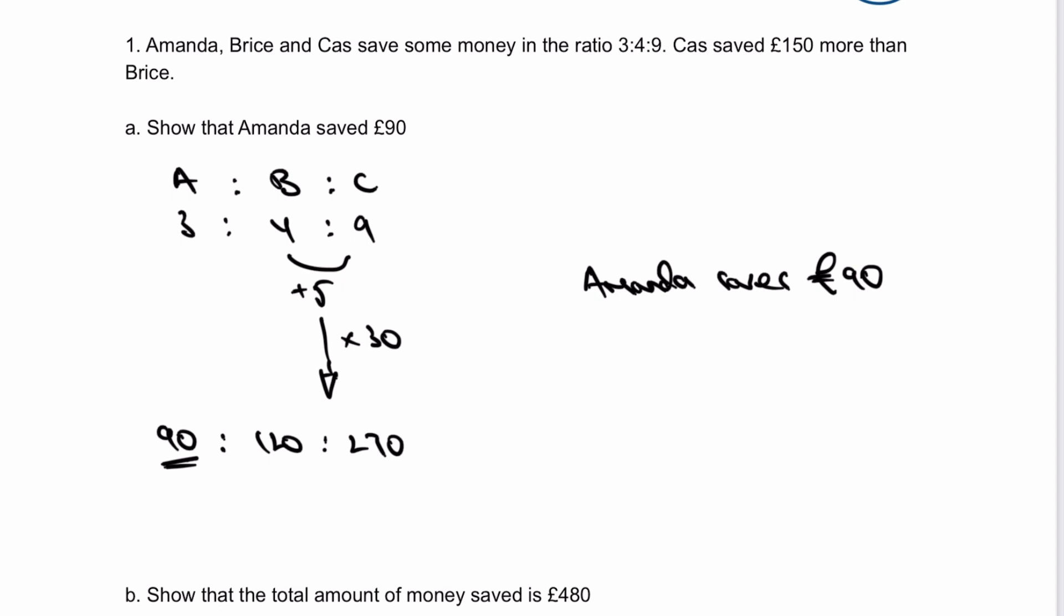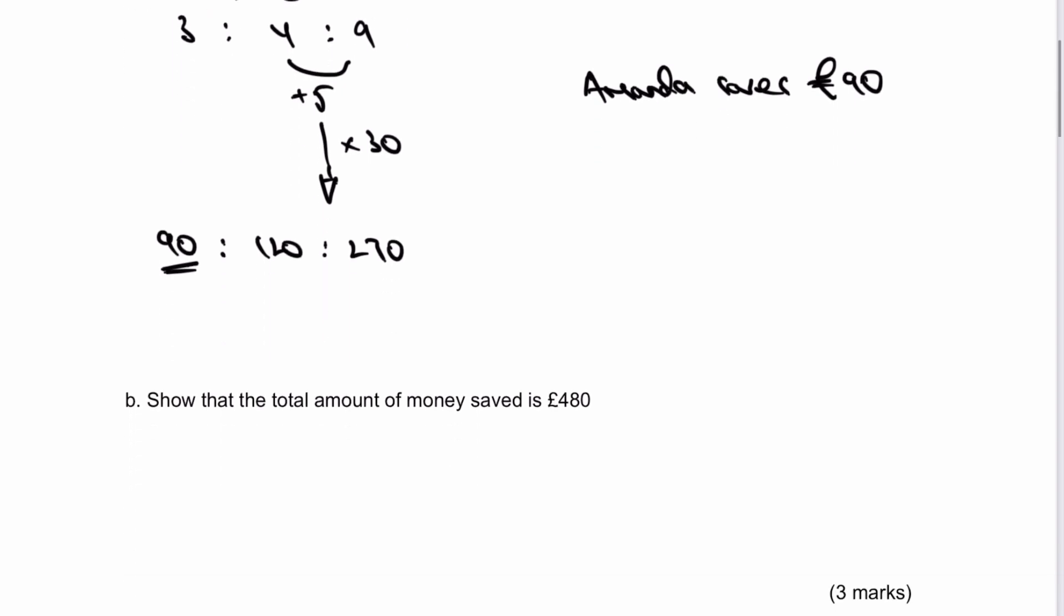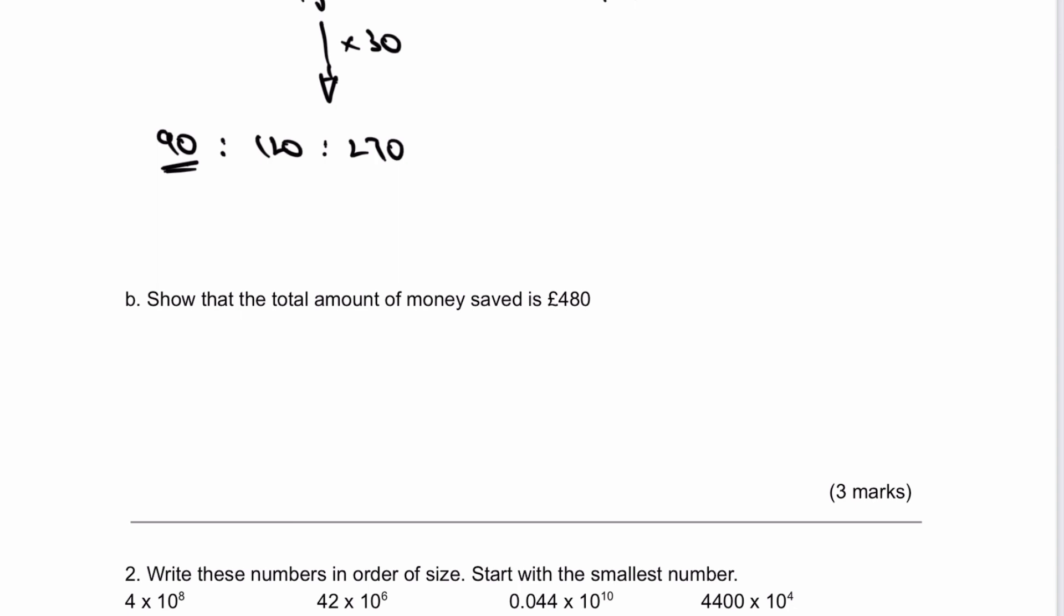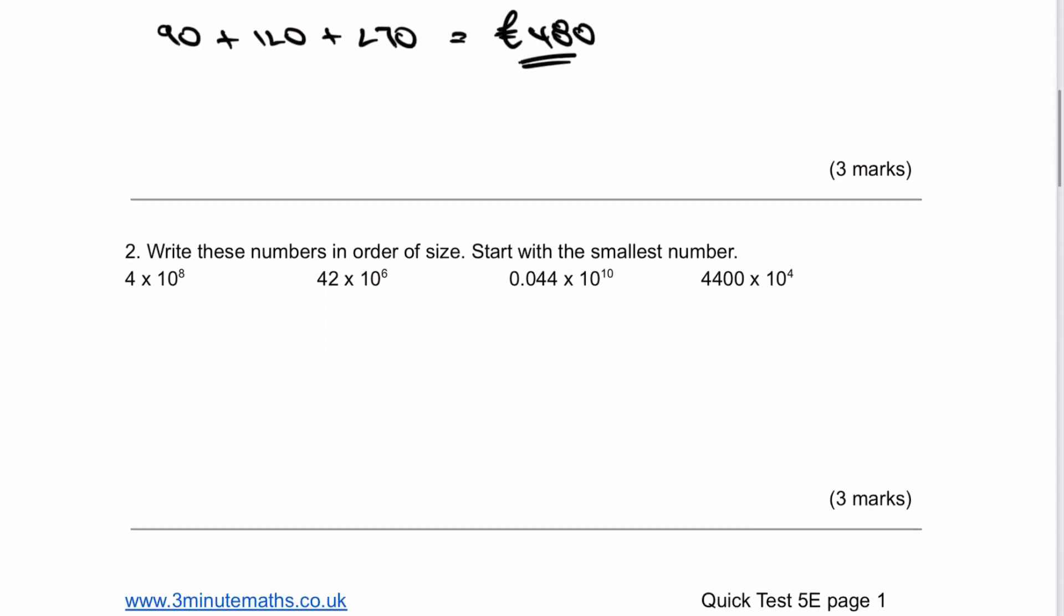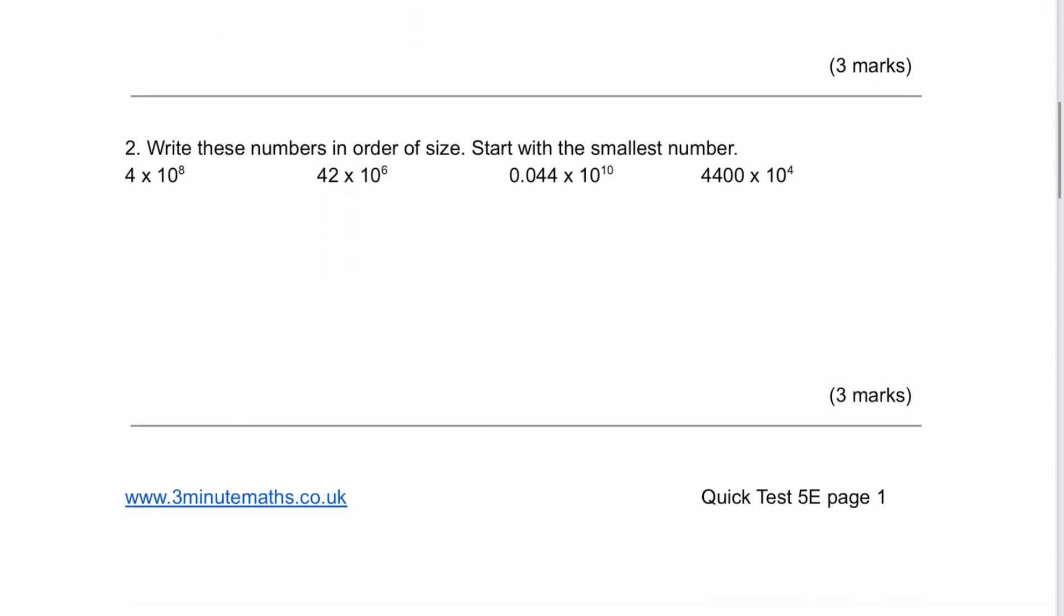Then it says show that the total amount of money saved is £480. So we just add all those together: £90 plus £120 plus £270 equals £480, which is part B. Hopefully that's been useful. Please stop the video, have a go at each of these questions and compare your own solutions.